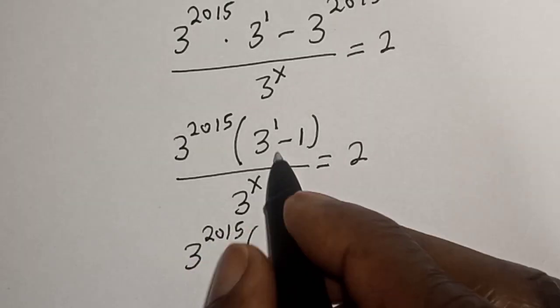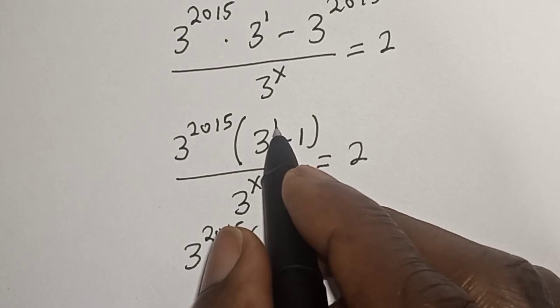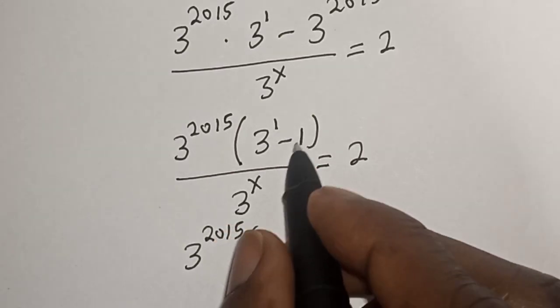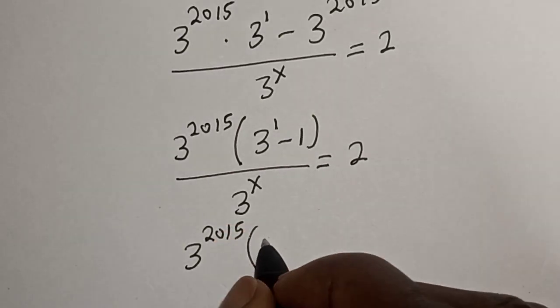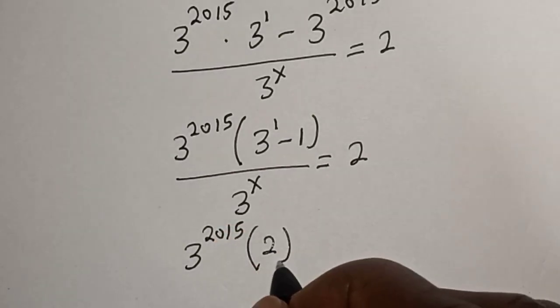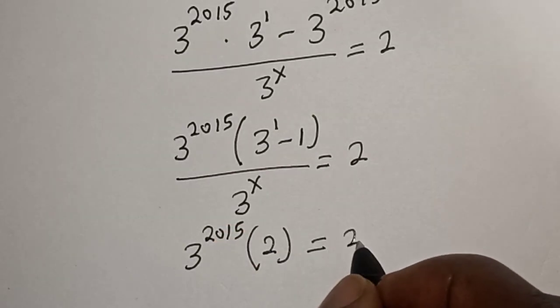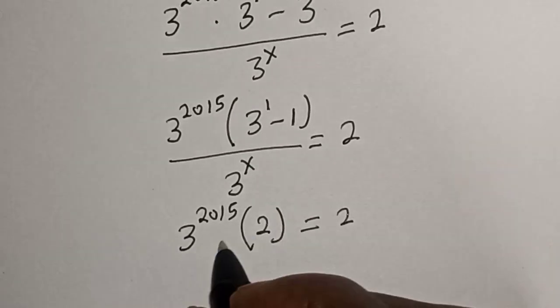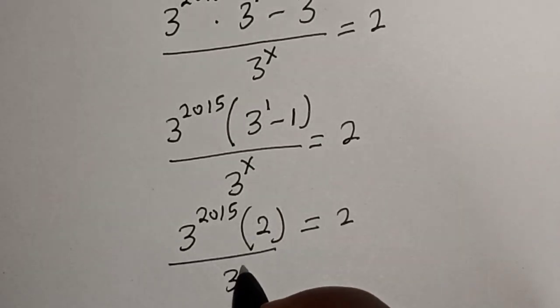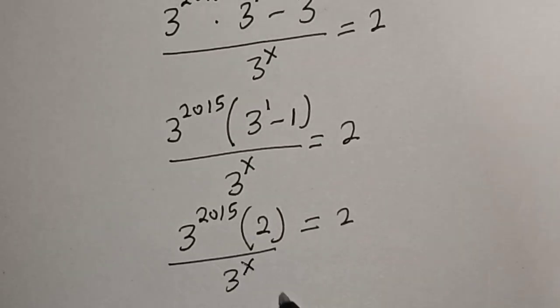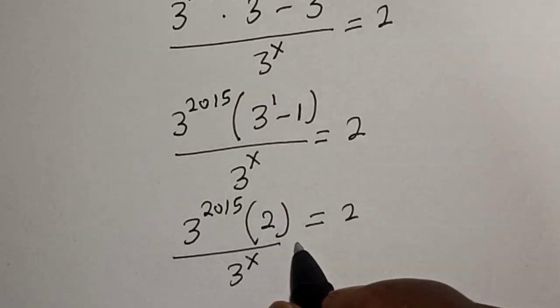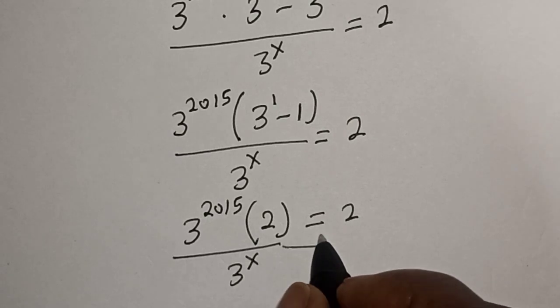3 raised to power 2015 brackets: 3 raised to power 1 is the same thing as 3, minus 1 equals 2, over 3 raised to power s. Now let's cross multiply.